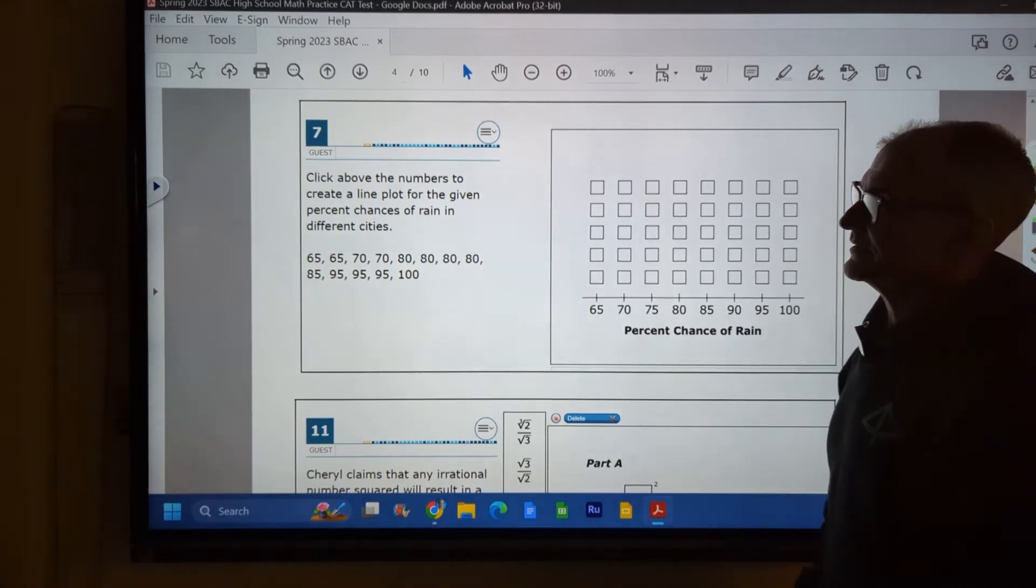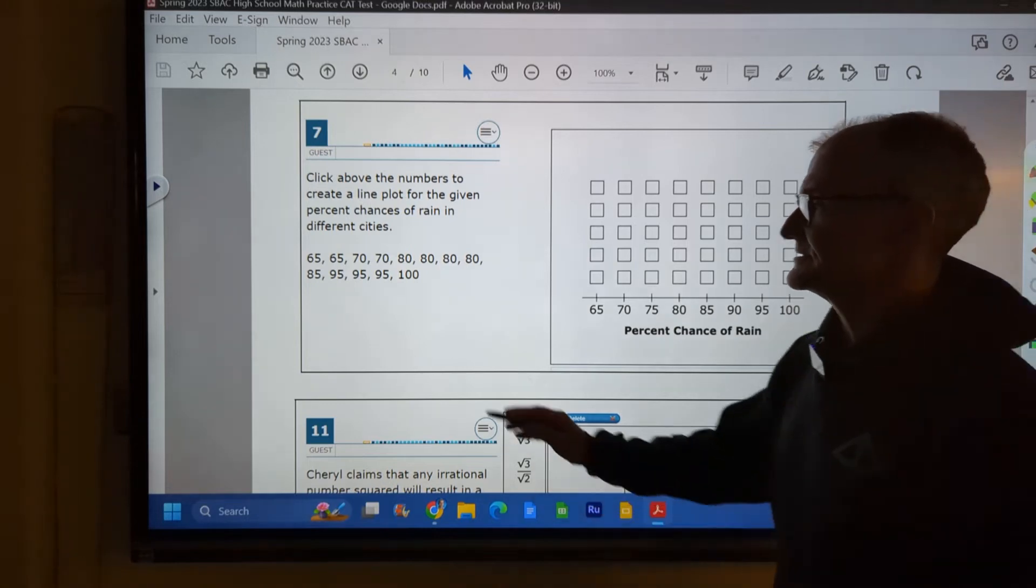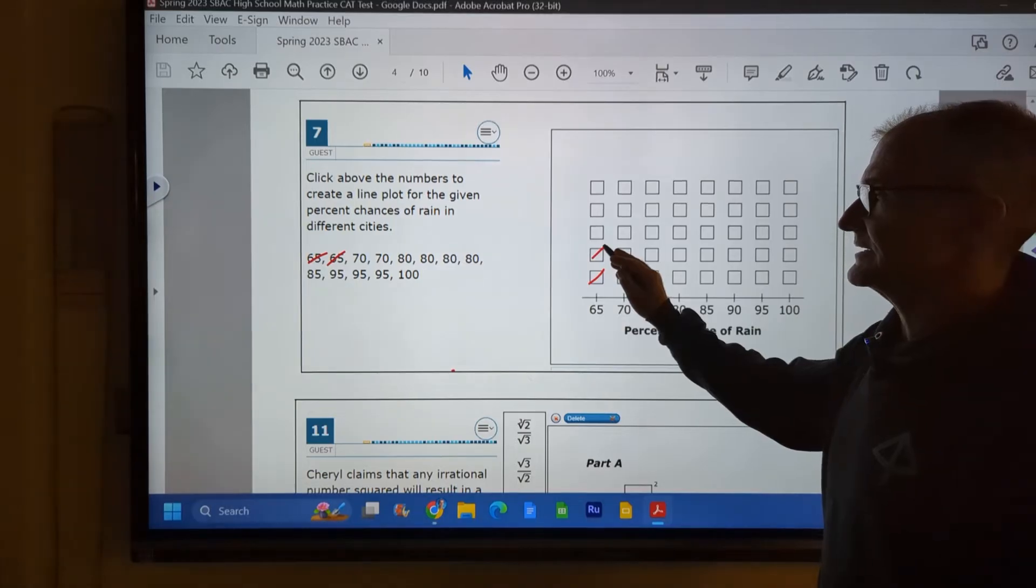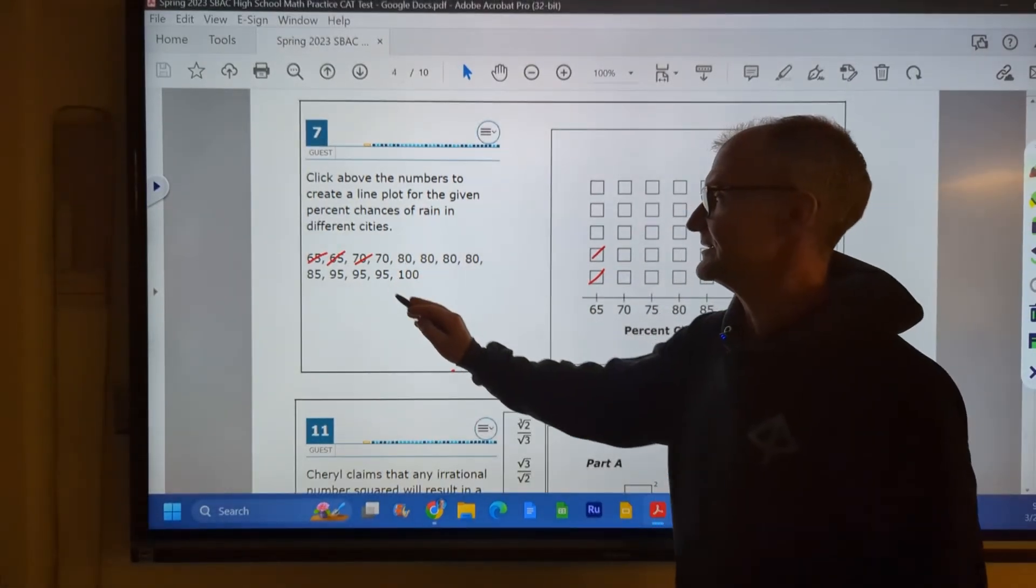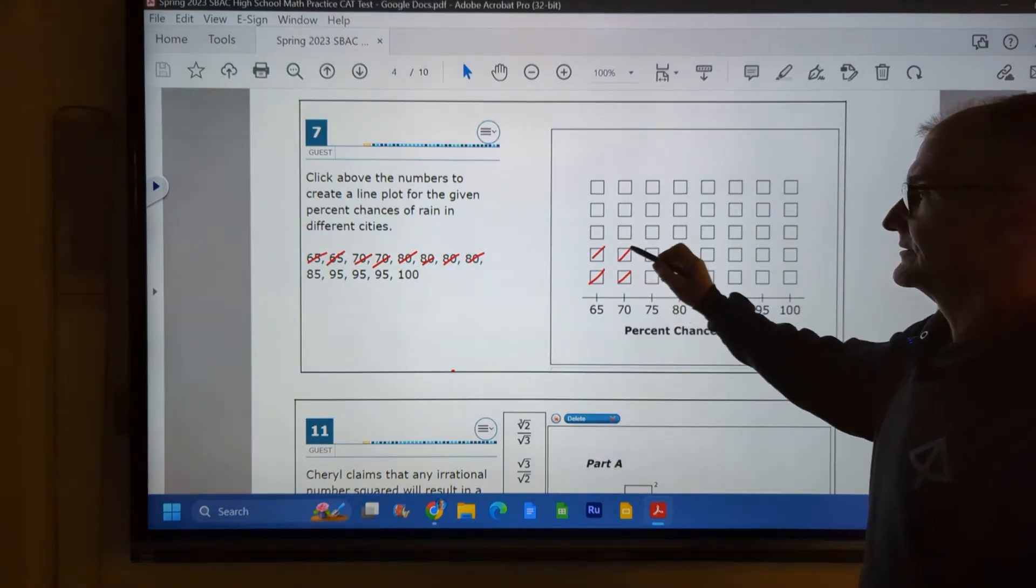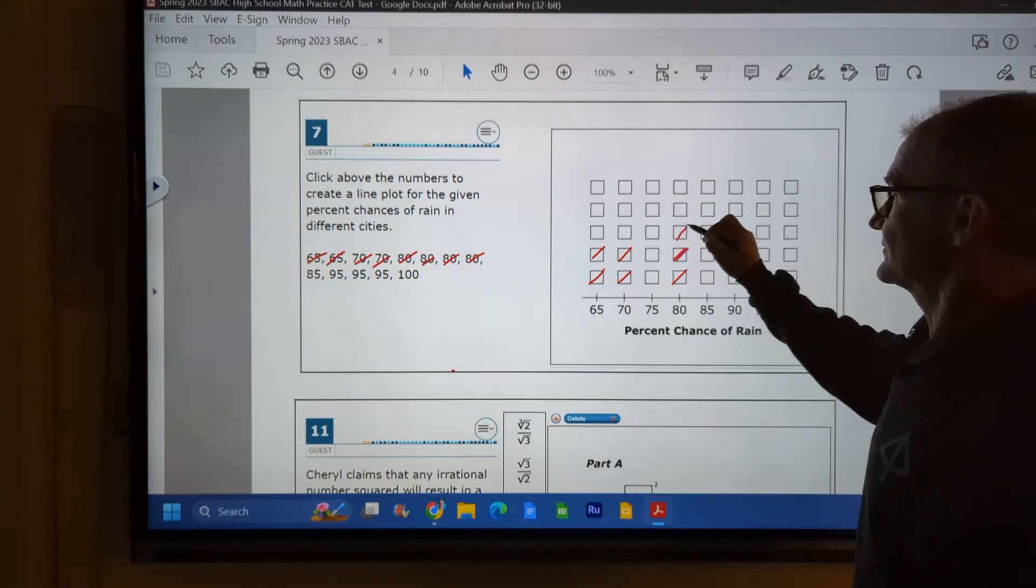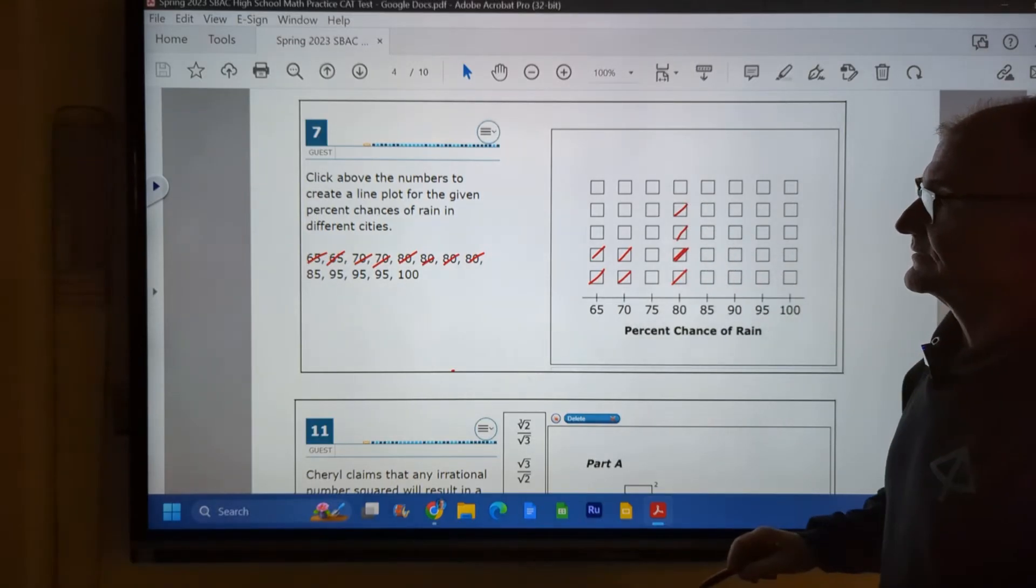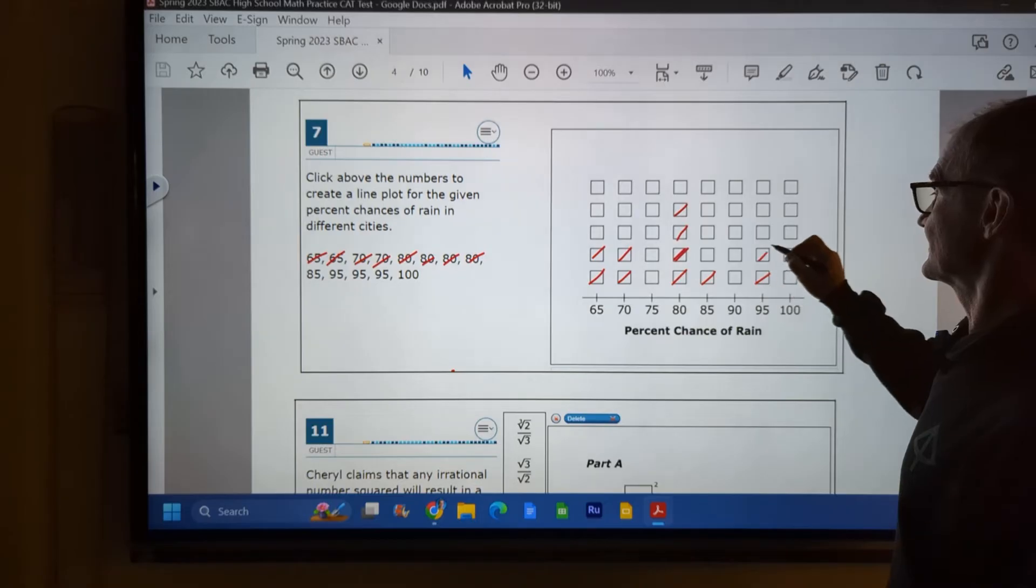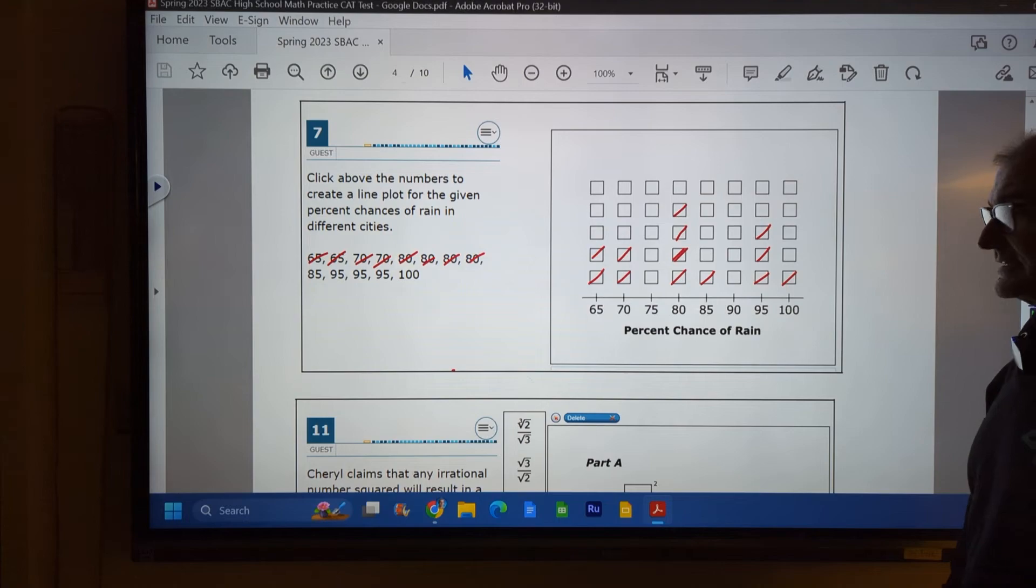Okay, here we have a bar graph. Click above the numbers to create a line plot for the given percent chance of rain in different cities. So sixty-five, I have one, two. Seventy, I have two values of seventy. One, two, three, four. Four values of eighty. One, two, three, four. One value of eighty-five. Three values of ninety-five. And then one value of one hundred. This is really an exercise just on keeping track of data.